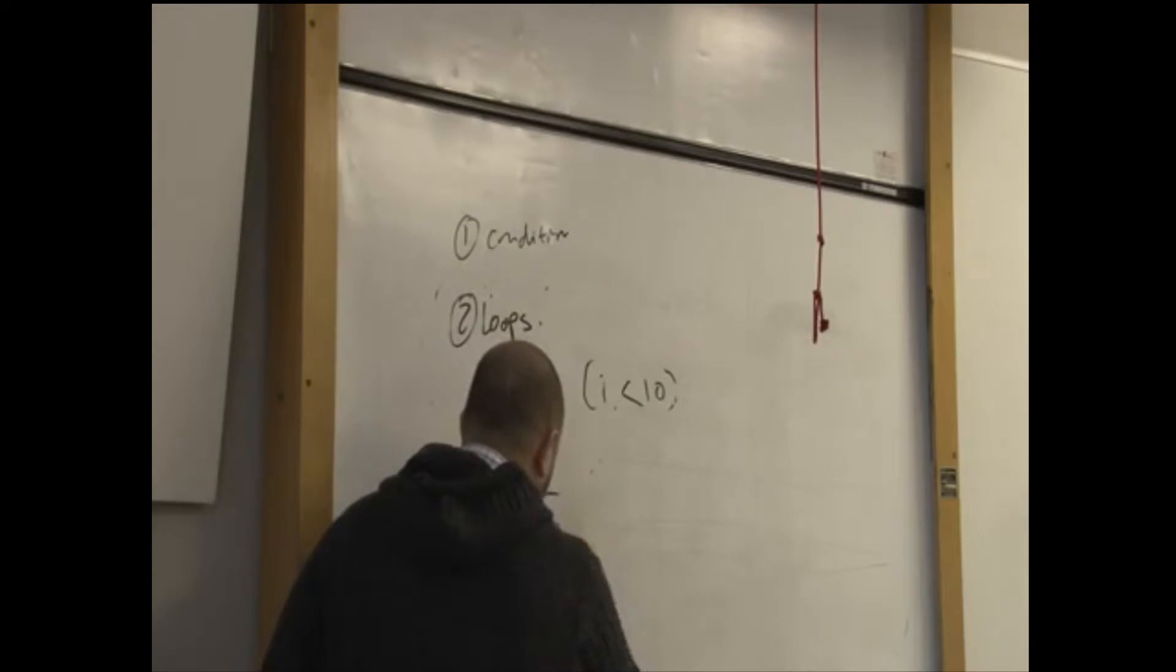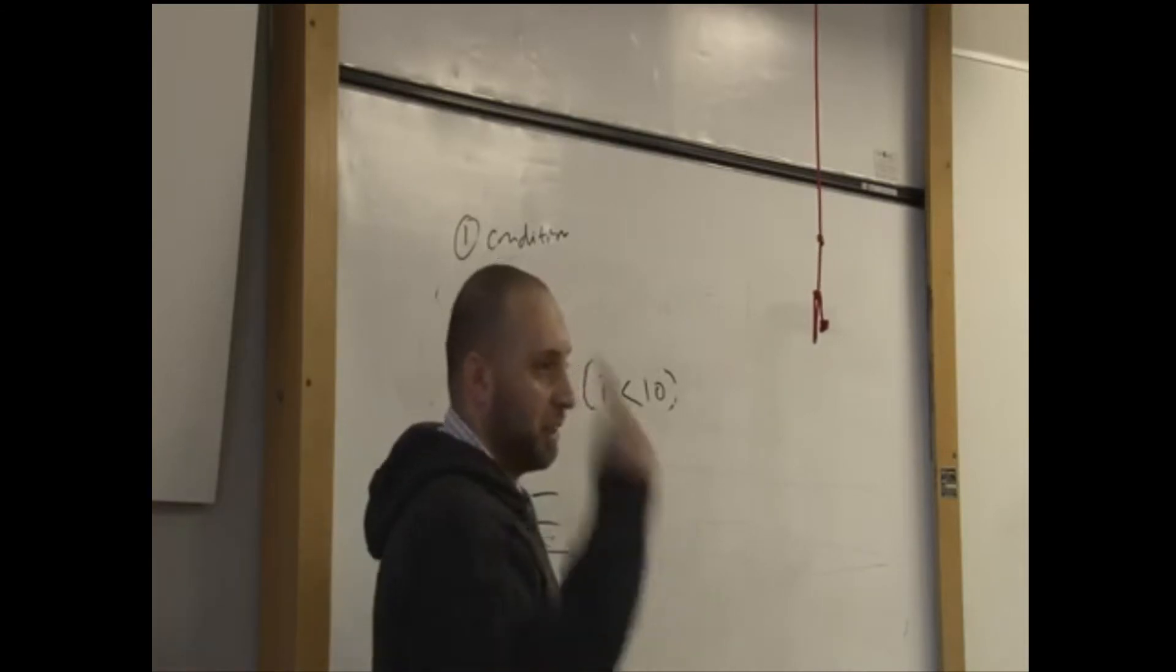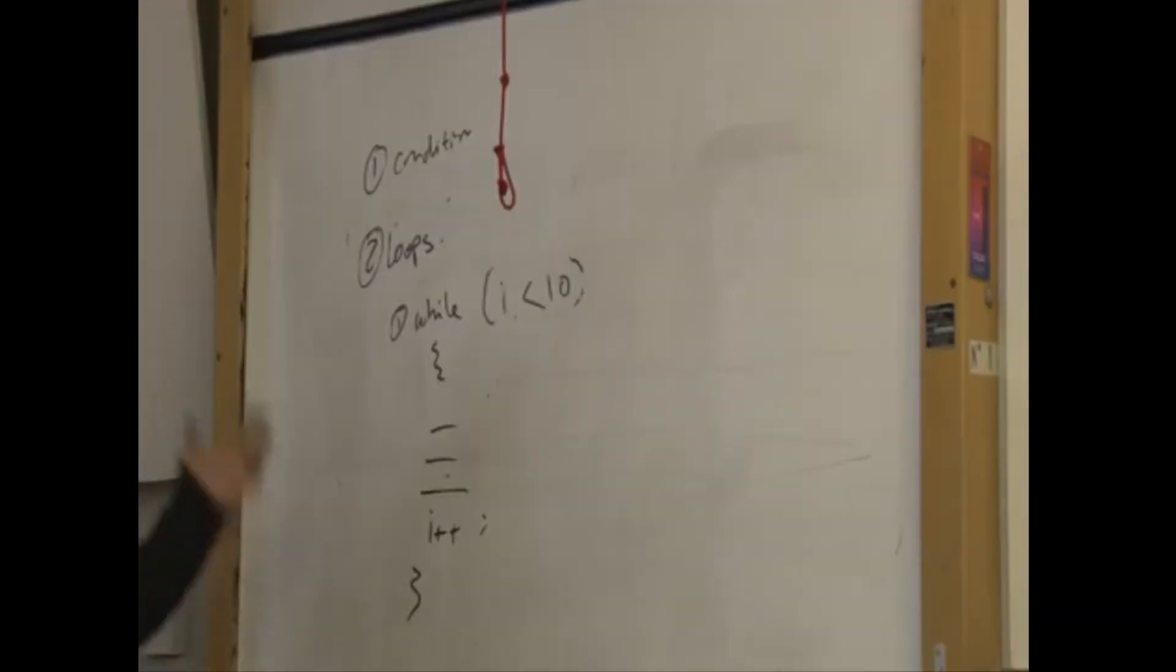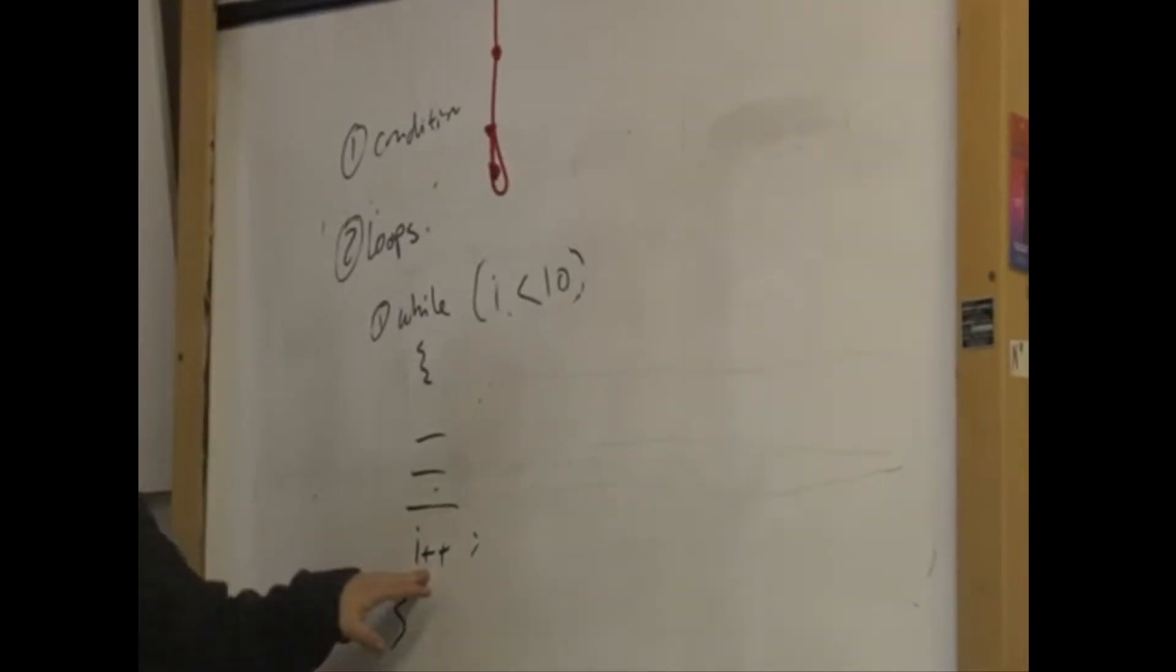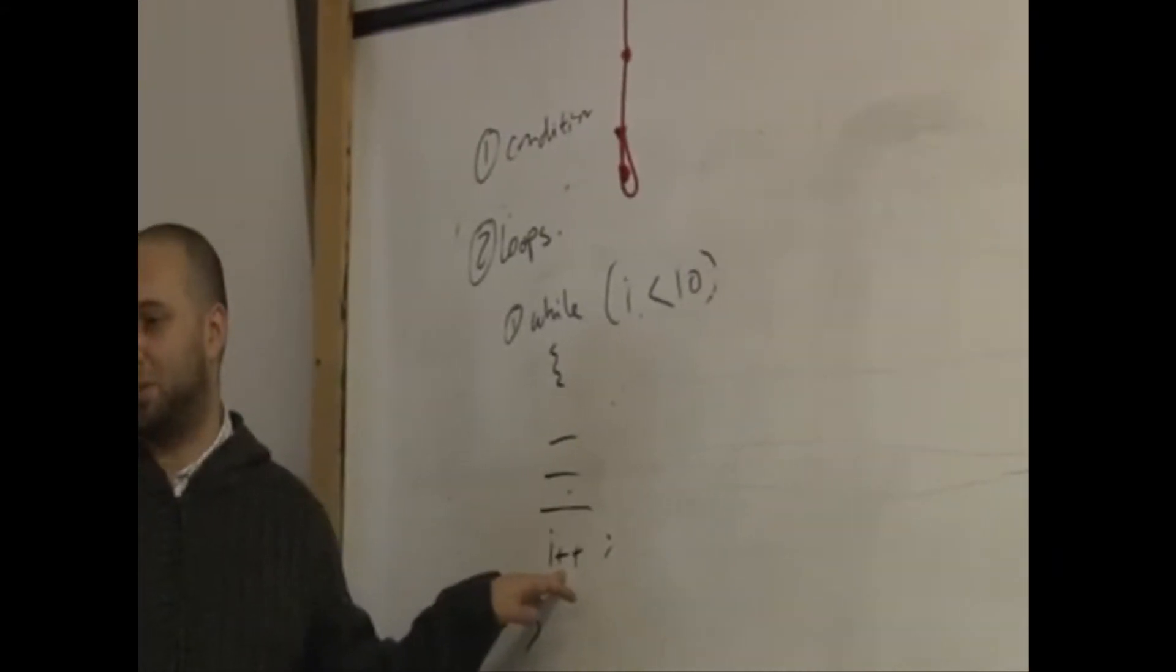And then you would do the code down here, and you would say repeat, so you keep saying i plus plus. Now, i plus plus basically means i plus one. So what you've got here, you're incrementing i. Now, i is what, like I said, is a variable.